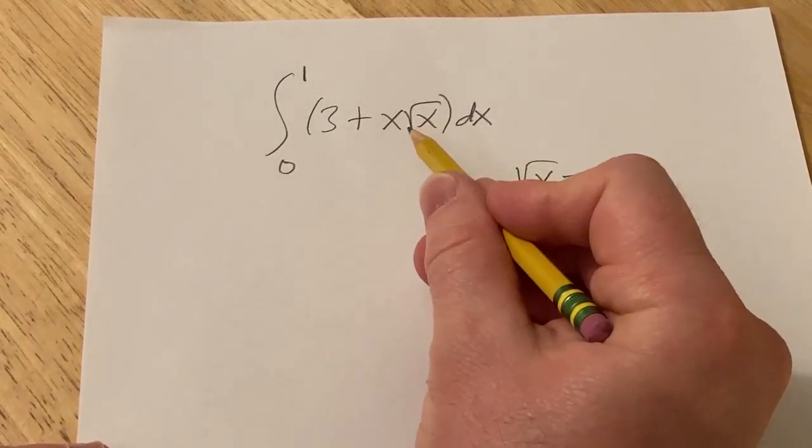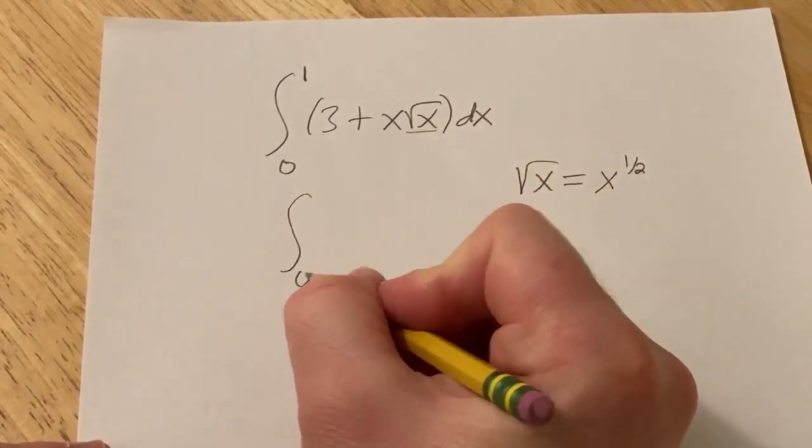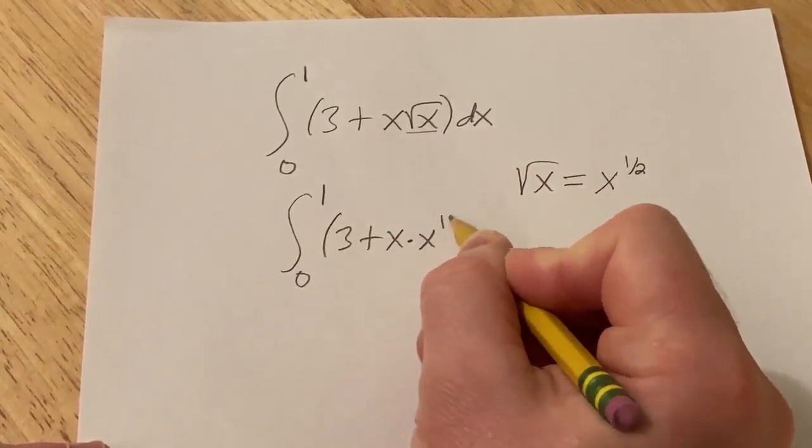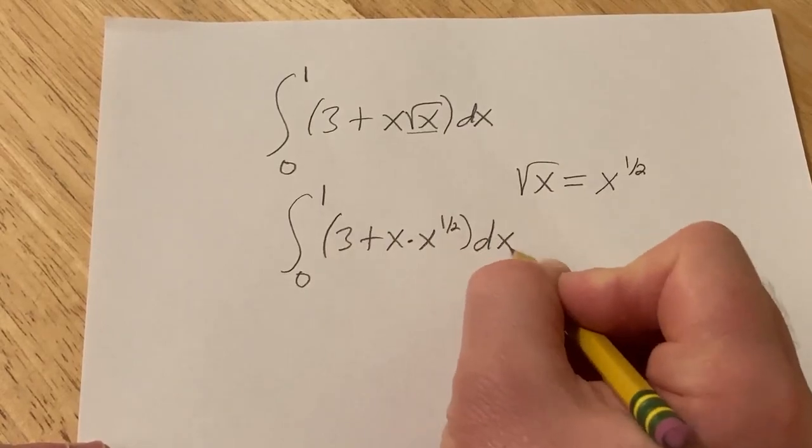So what I'm going to do here is first rewrite this. This is the integral from 0 to 1 of 3 plus x times x to the 1/2 dx.